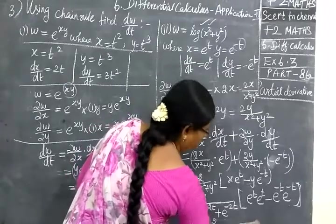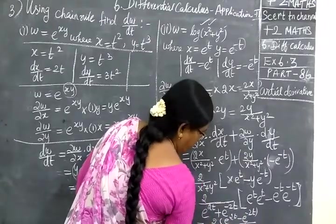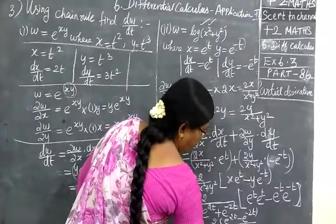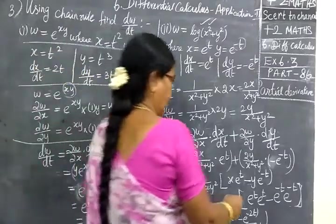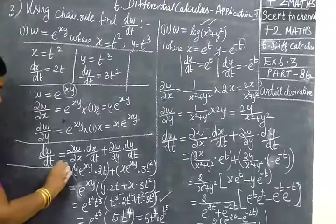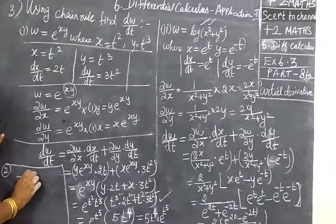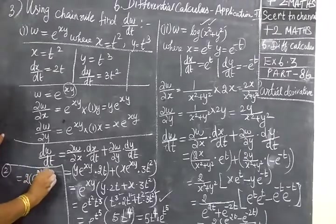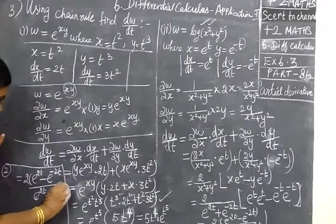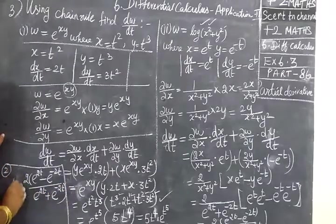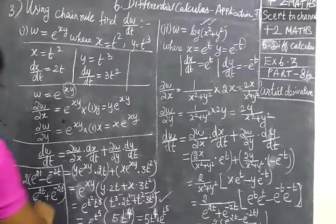So I write the answer here for the second sum. The answer is 2 e power 2t minus e power minus 2t, by e power 2t plus e power minus 2t. The sign is plus in the denominator. That is the dw by dt. So we check the answer for this. The answer 2 e power 2t minus e power minus 2t over e power 2t plus e power minus 2t is correct.